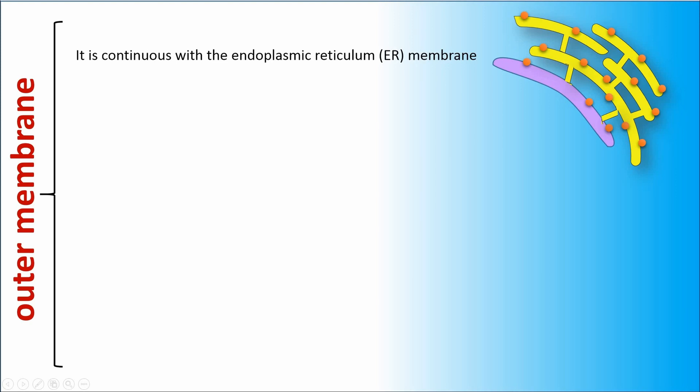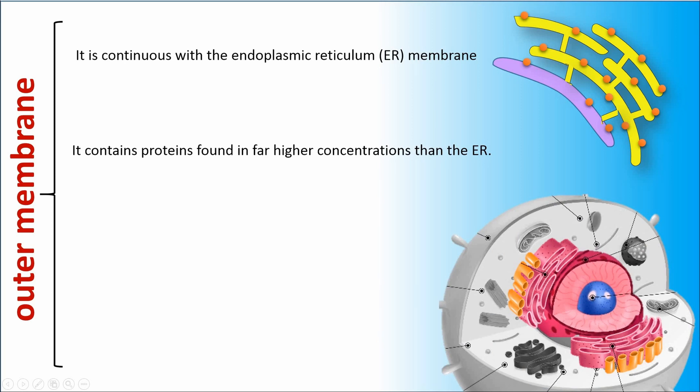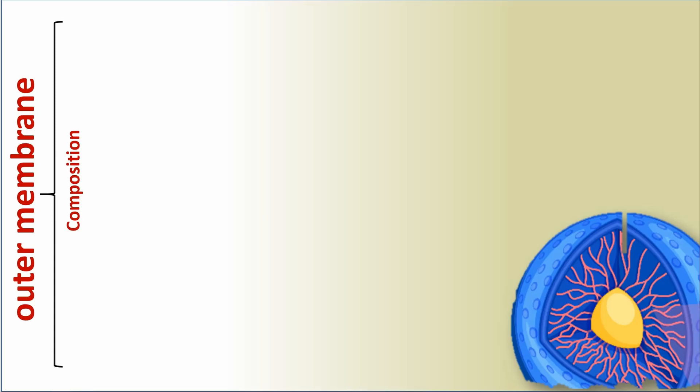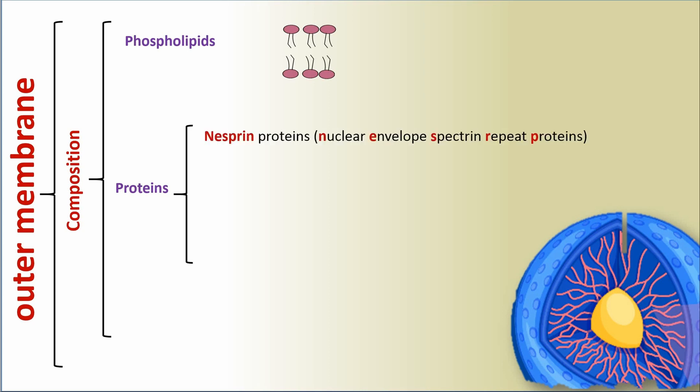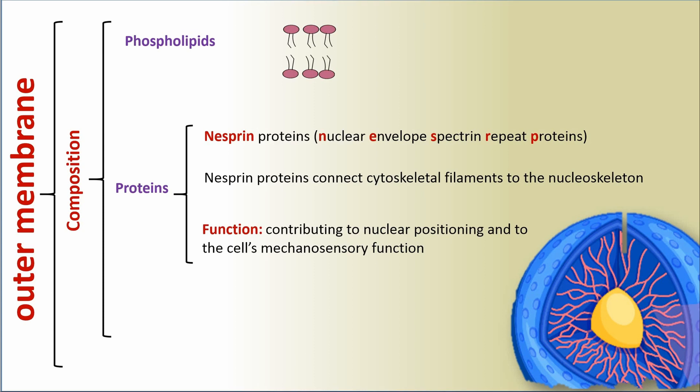Outer membrane. It is continuous with the endoplasmic reticulum or ER membrane. It contains proteins found in far higher concentration than the ER. Outer membrane composition. One of outer membrane composition are phospholipids. Other composition are proteins. Nesprin proteins or nuclear envelope spectrin repeat proteins connect cytoskeletal filaments to the nuclear skeleton. Their function is contributing to nuclear positioning and to the cell's mechanosensory function.